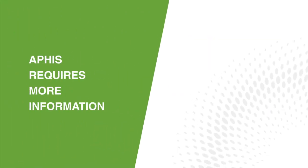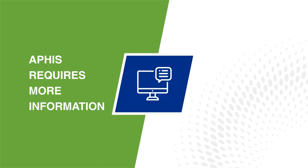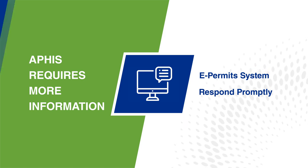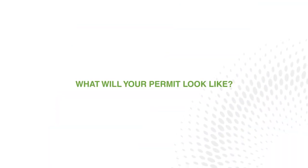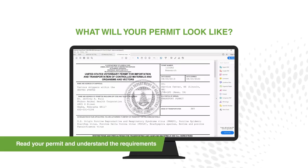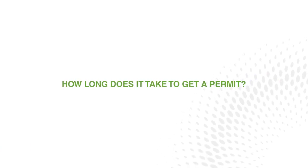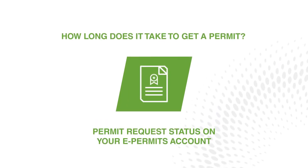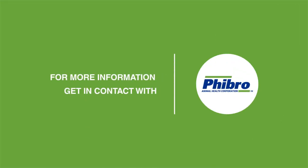Keep in mind, if APHIS requires more detailed information, they will contact you prior to issuing the permit. Using the e-permit system, be sure to respond to any requests from the USDA promptly to avoid delay. Once you have received your new permit, be sure to read it over to fully understand the requirements. Processing time varies, but you can always check the status of your permit request on your e-permits account. For more information, get in contact with Fibro Animal Health Corporation.